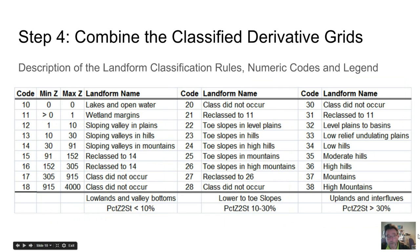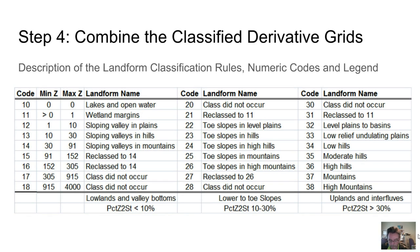In step 4, we simply add the numeric code values for the eight relief classes to the three code values for the relative slope position classes. This produces 24 unique combinations plus one additional code for open water of 10. Some of these possible combinations simply never occur, while others occur to such a limited extent that they can be removed and reclassified into neighboring classes.